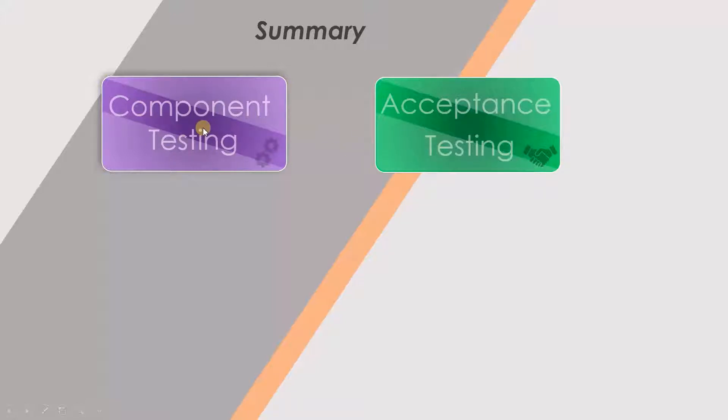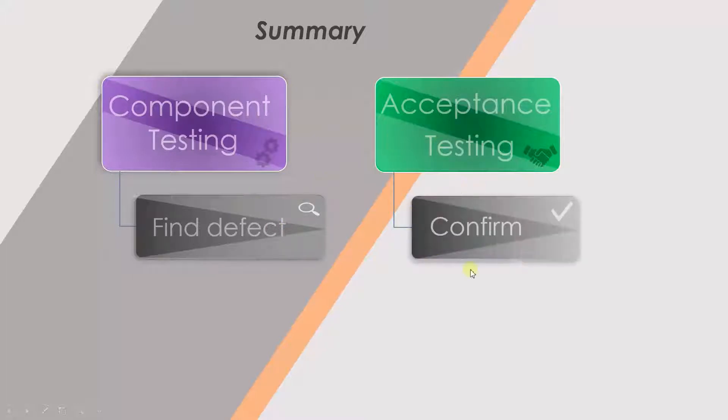In component testing, we try to find the defect. In acceptance testing, we try to confirm that all the requirements have been fulfilled.